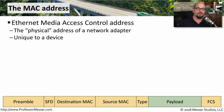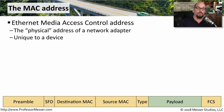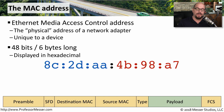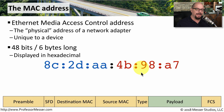The MAC address associated with an ethernet adapter is called the media access control address, and many people refer to it as the physical address of that ethernet adapter. The MAC address is unique — there's no other device in the world with exactly that same MAC address — meaning every device on your local network can be communicated with using this unique address. The MAC address is 48 bits, or 6 bytes long, and is usually displayed in hexadecimal, such as 8c2daa4b98a7.